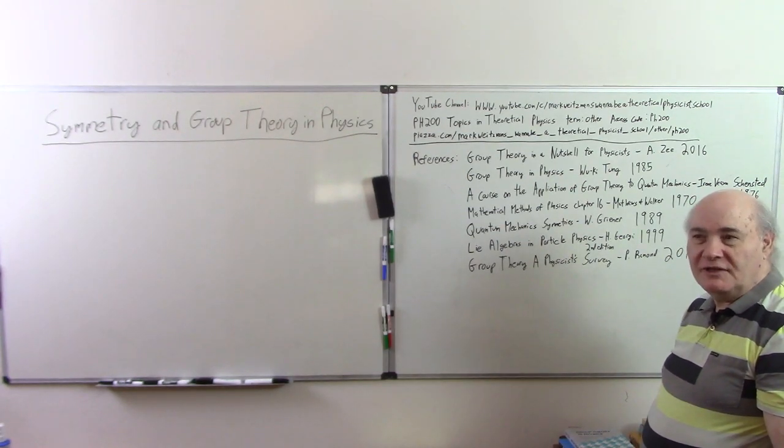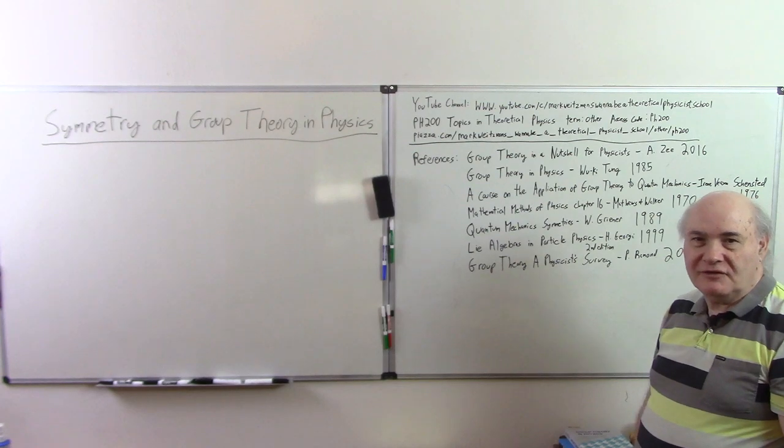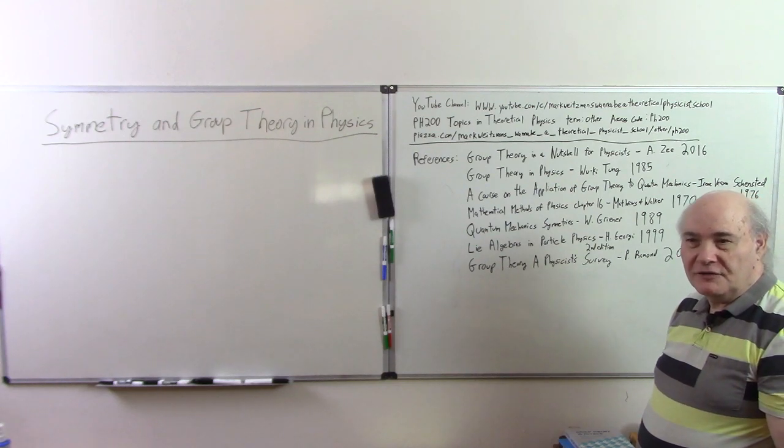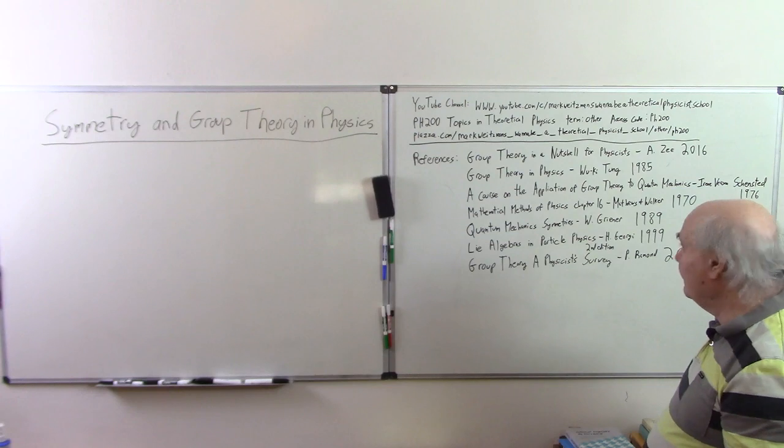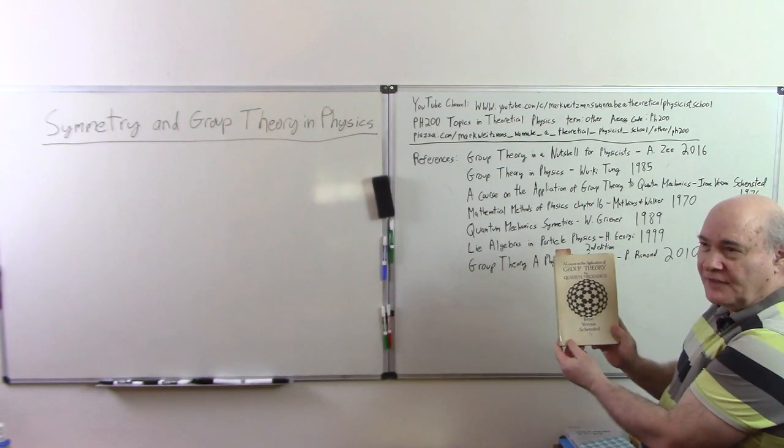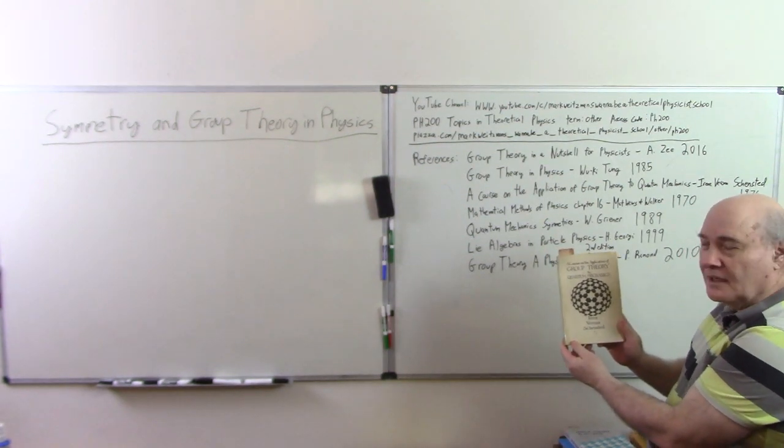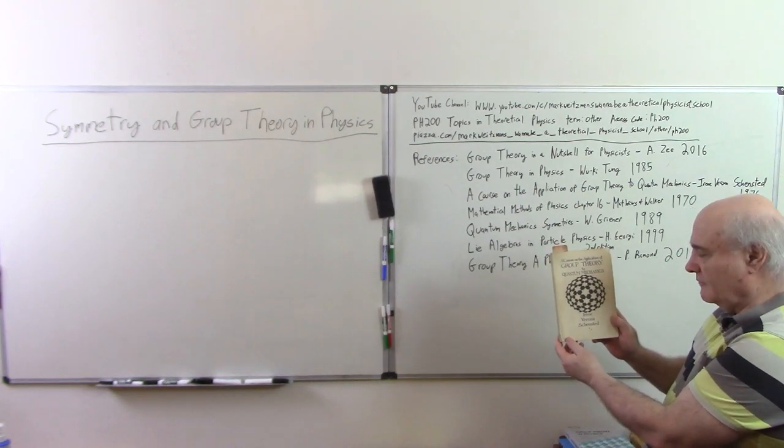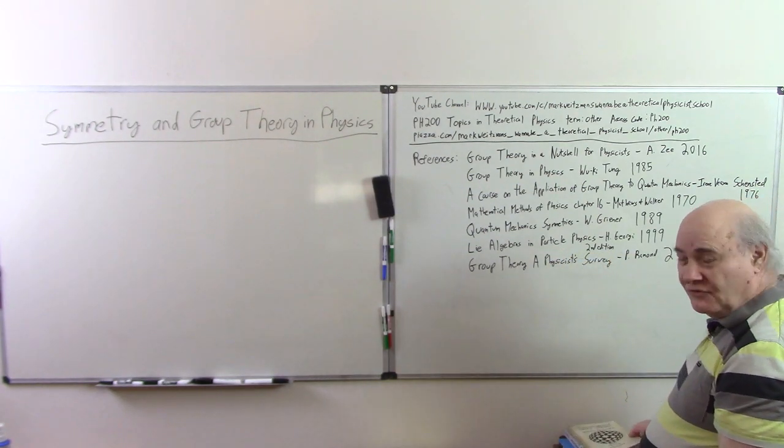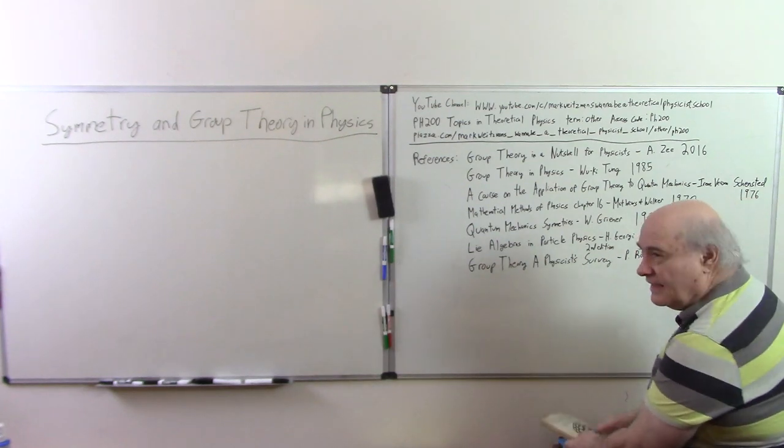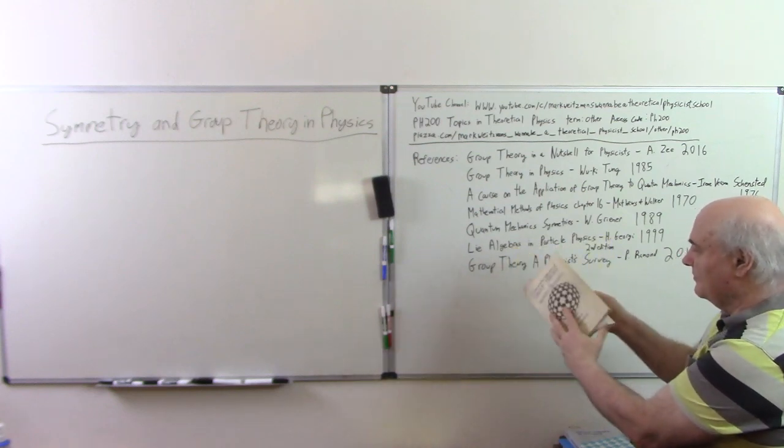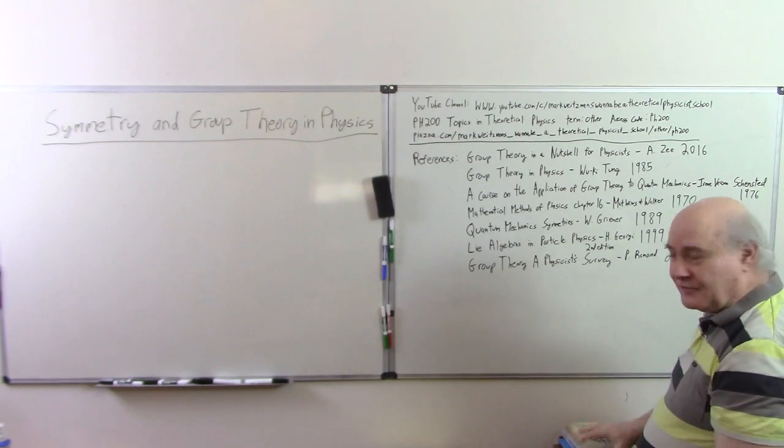He touches on the symmetry groups, he does it very fast. He touches on Young diagrams, he does it very fast. But it's kind of tough to really understand all of those areas from this book alone, which is why I recommend the following book. This is a very unusual book. It was written by a lady who passed away, who was a professor, I think, at the University of Michigan. She passed away a couple of years ago. Her name is Irene Verona Shenestead and I think her husband was also a mathematician or physicist. She wrote, she self-published this book. It's typed and handwritten. I don't know if you can read that, but the equations are all in hand. So it would be nice if somebody would make a LaTeX file of this and republish it.